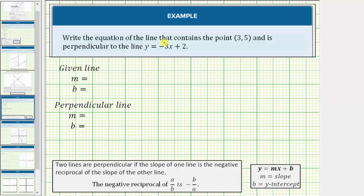We're asked to write the equation of the line that contains the point (3,5) and is perpendicular to the line y = -3x + 2.